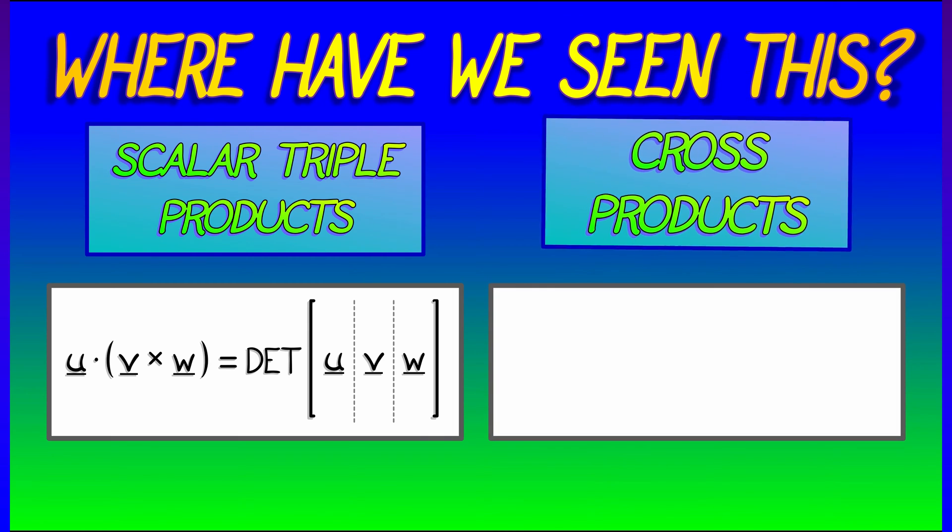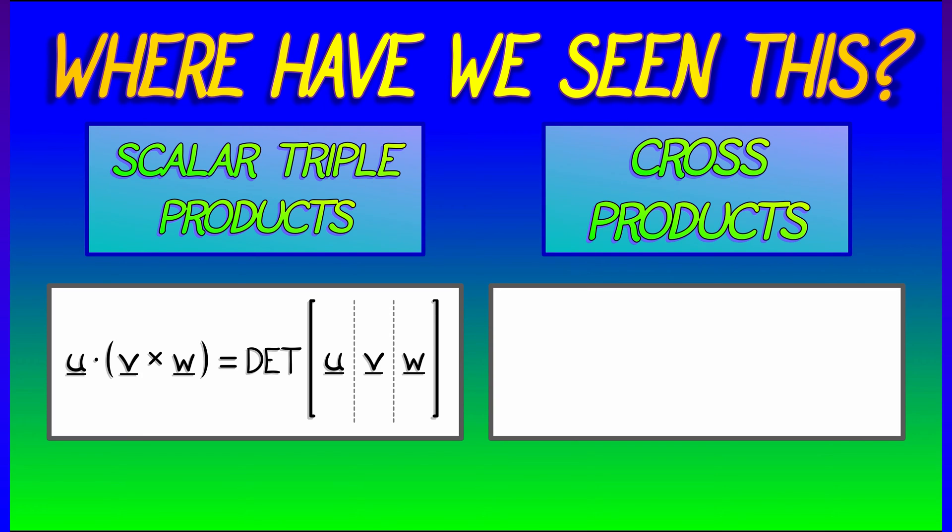And in like manner, we can think about cross products the same way in terms of determinants with a little bit of a tweak. If I take V cross W and pack those two vectors into the second and third columns of a three by three matrix, then what I could do is a little bit of a trick where I can pretend that the first column is I, J, K.